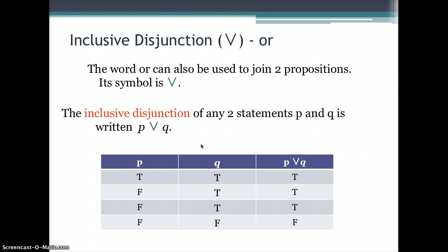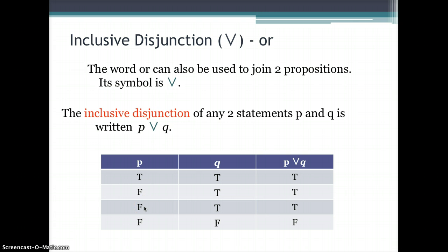For inclusive or, this means either P or Q is true, or possibly both are true. Looking at the truth table: when both propositions are true, P or Q is true. When the first is false and the second is true, P or Q is true. When the first is false and the second is true, P or Q is true. The only time inclusive disjunction is false is when both propositions are false.